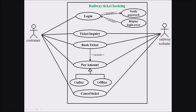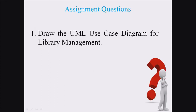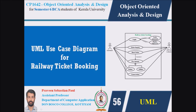Hope you understood this topic — this is how we draw a railway ticket booking system use case diagram. The assignment question is: draw the UML use case diagram for the library management system. In the upcoming lecture we will discuss another type of UML diagram. See you soon — goodbye, thank you and all the best.